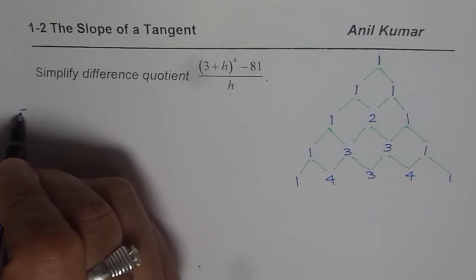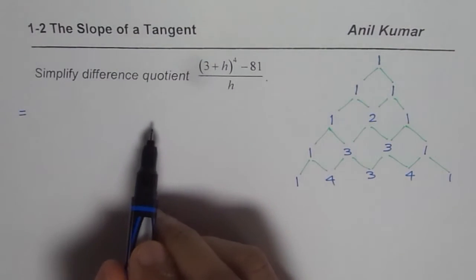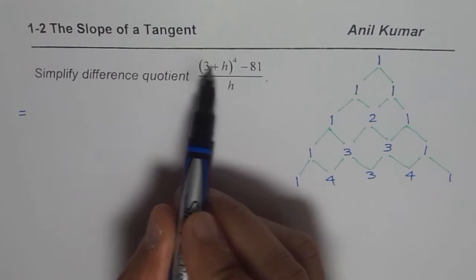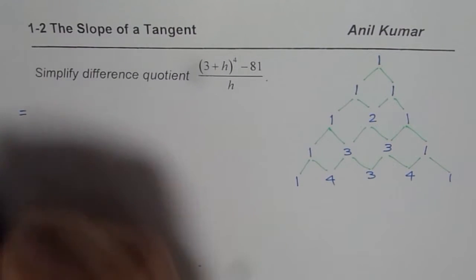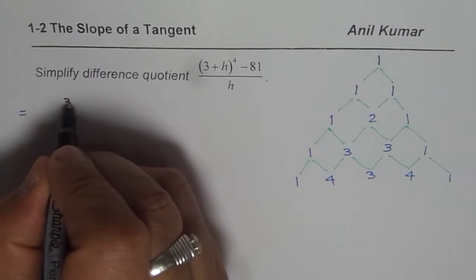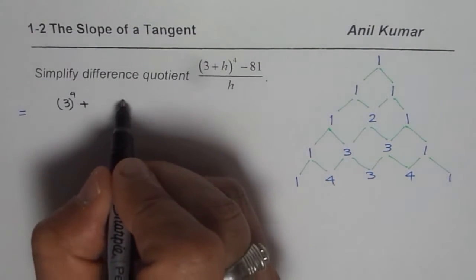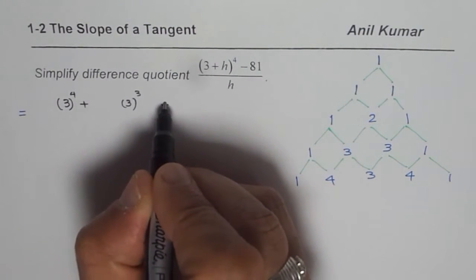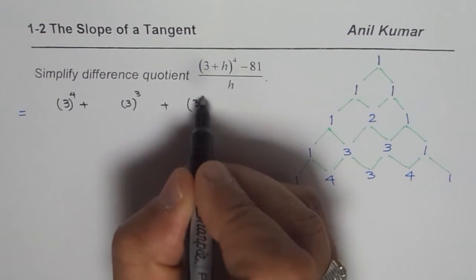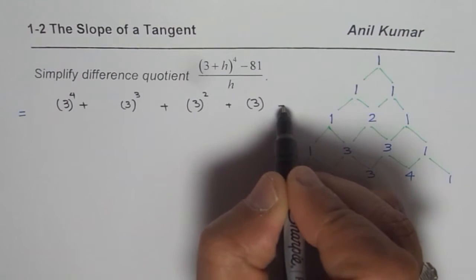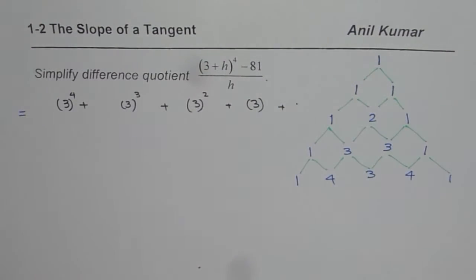Knowing these coefficients, we can now expand the expression 3 plus h to the power of 4. So the first expression is, let us say a and b are these two. Then the degree of 3 will be like, kind of like this. So we write 3 to the power of 4, plus 3 to the power of 3, plus 3 to the power of 2, and then plus 3 to the power of 1, plus 3 to the power of 0. That means 1. So that is the last term.